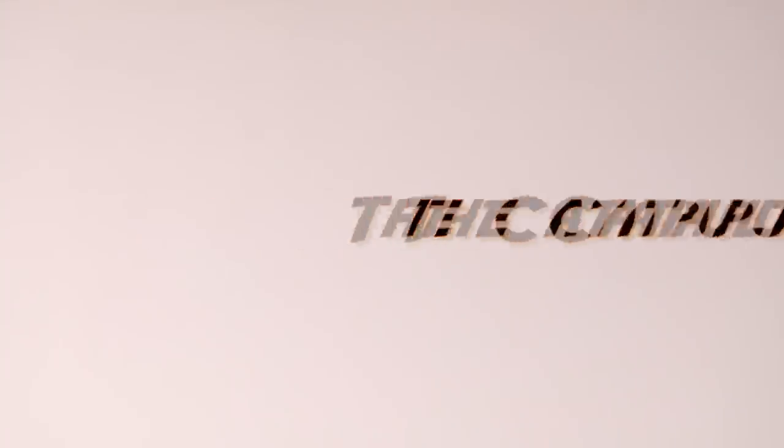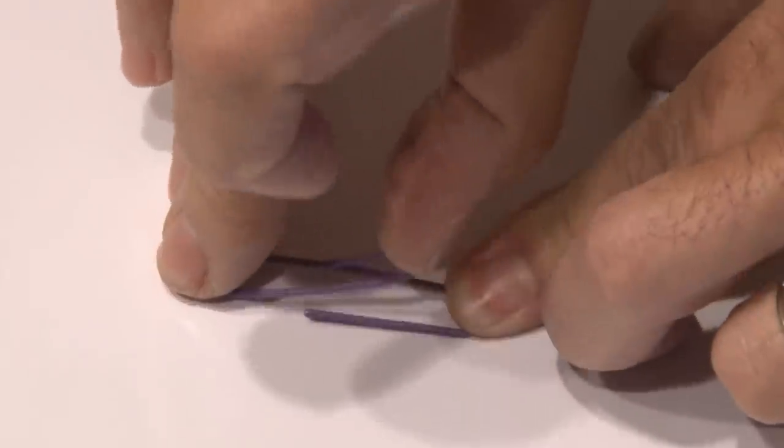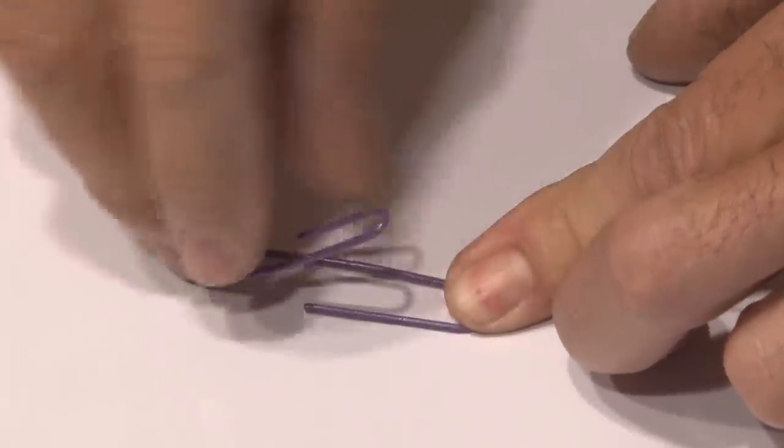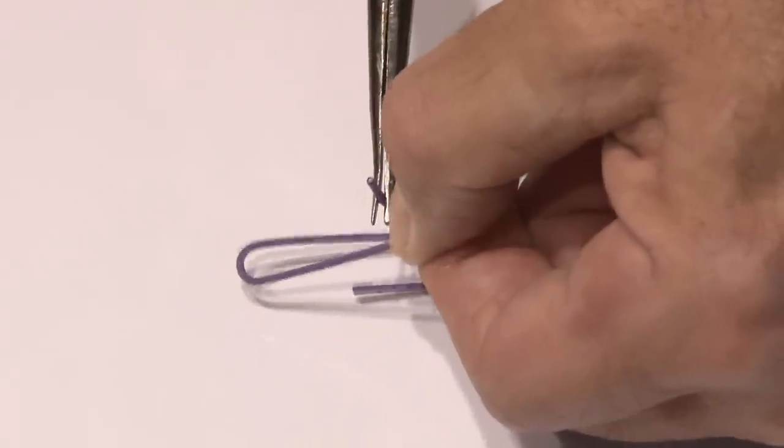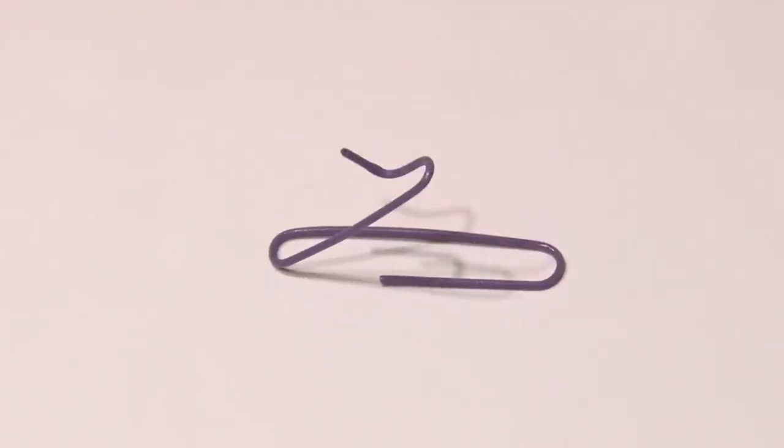Now it's time for the paperclip catapult, and we'll be using a larger size paperclip for this one. We'll take the inside portion of this paperclip, and we're going to bend it up at about a 45 degree angle. Then about halfway down, we're going to take the end and bend it up at a 90 degree angle.